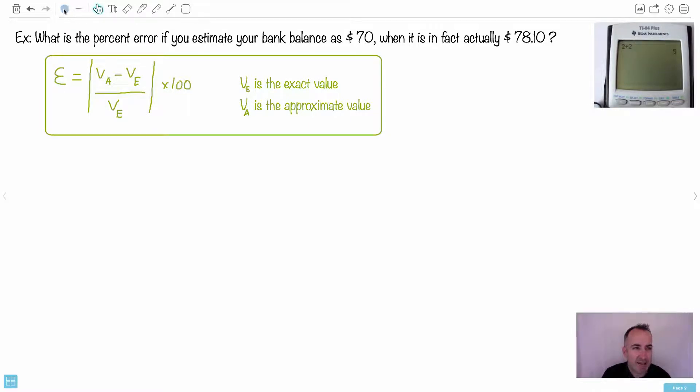So then we just have to now identify which of these numbers is what. Which one is the exact? Which one is the approximate? Give it some thought. I hope you see that this one right here is the exact. So this is going to be the exact value, which is VE. Therefore, this one here must be the approximate, right? You estimated it. So that must be VA.